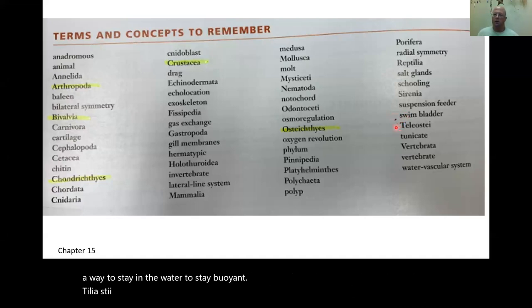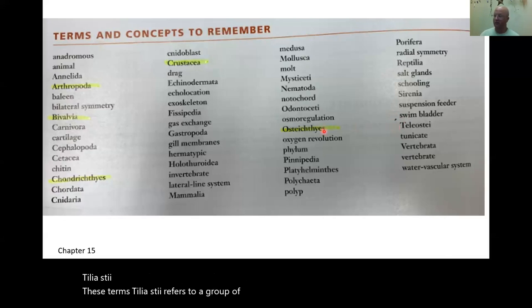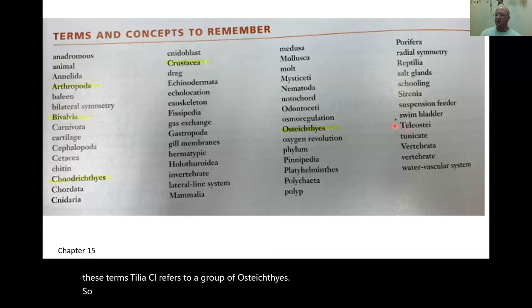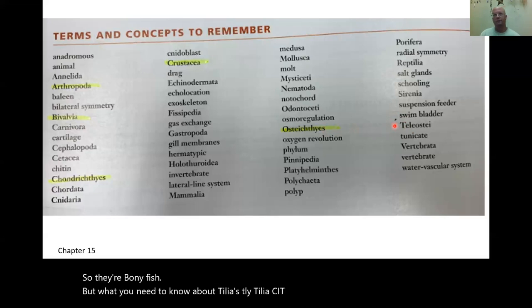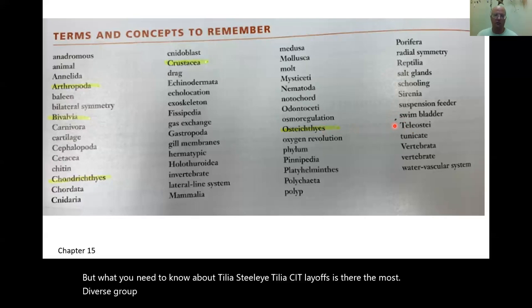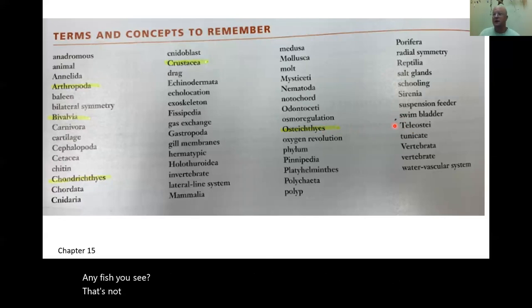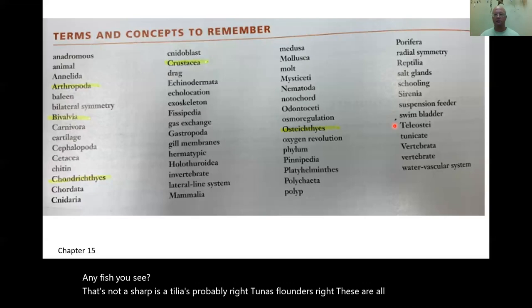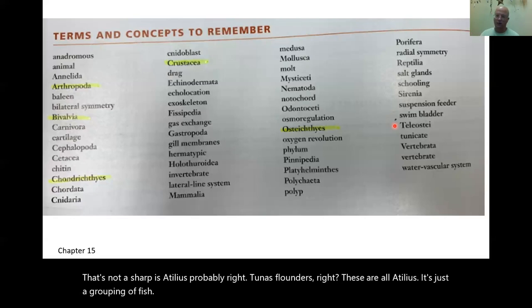Teleostei refers to a group of osteichthyes — bony fish. What you need to know about Teleostei is that they're the most diverse group of vertebrates on the planet. Pretty much any fish you see that's not a shark is a teleost: tunas, flounders. They're just a grouping of fish — the most diverse vertebrate on Earth.